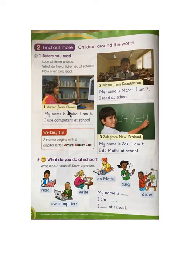She is Amaira from Oman. Oman is the name of the country. By the way, which country do we live in? Yes, we live in India. Our country is India. Next, Marat — Marat is from Kazakhstan. And Zach — Zach is from New Zealand.